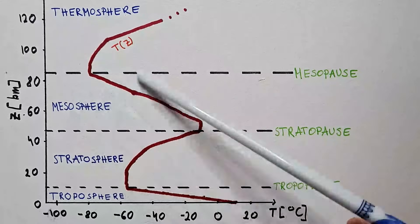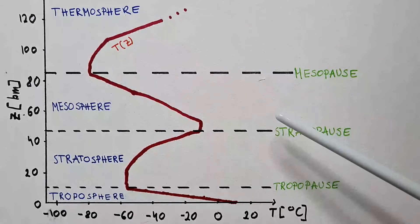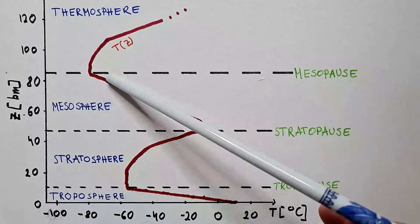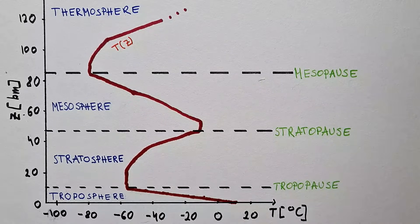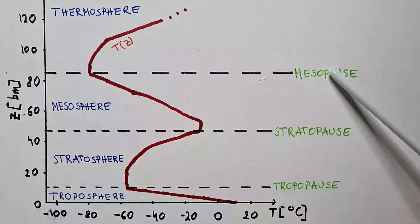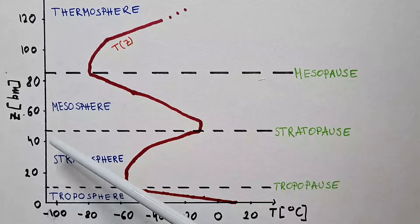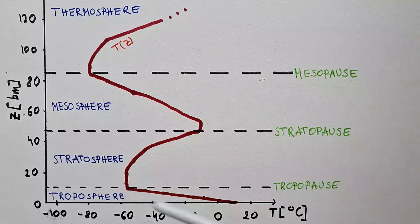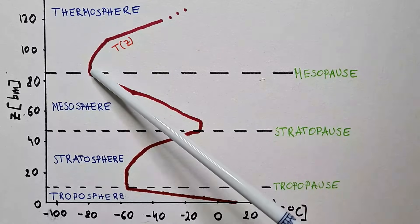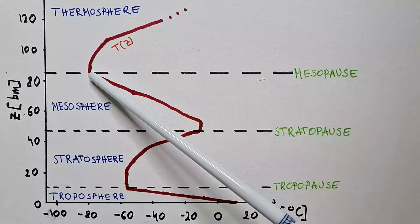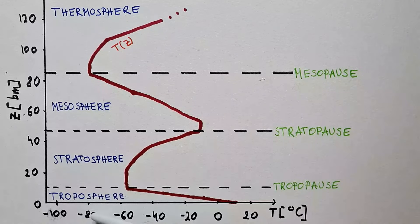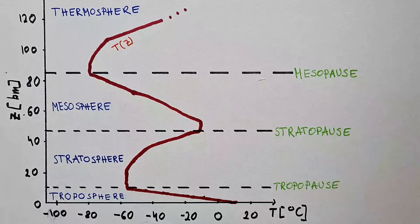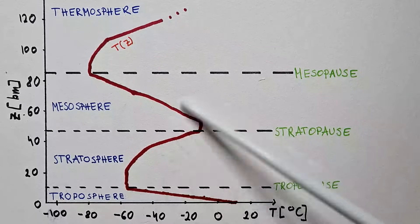The next layer in our atmosphere is the mesosphere. In the mesosphere, temperature again decreases with altitude, and the top of this layer is called the mesopause. This layer is roughly between 50 kilometers and 85 kilometers above the surface. The coldest temperatures on our planet are usually found at the top of the mesosphere — between minus 80 and minus 97 degrees Celsius.